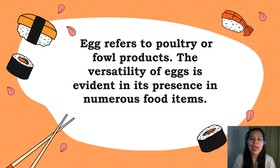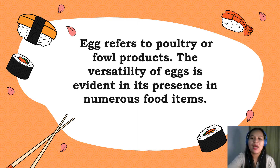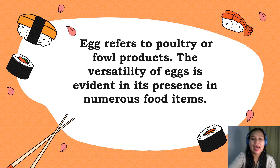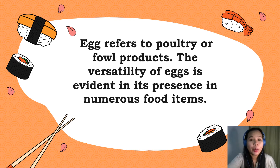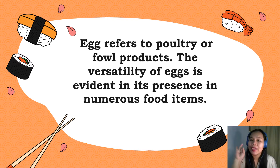Let's have its meaning. Egg refers to poultry or fowl products, which means they come from either chicken, ducks, or bird. The versatility of eggs is evident in its presence in numerous food items. And normally, we distinguish three parts of an egg: the egg yolk, the eggshell, and the egg white.